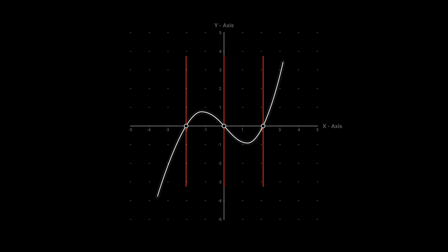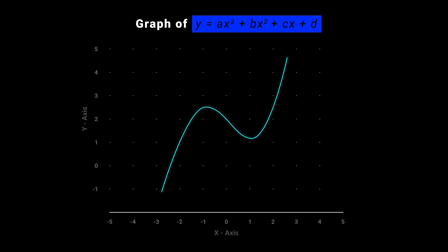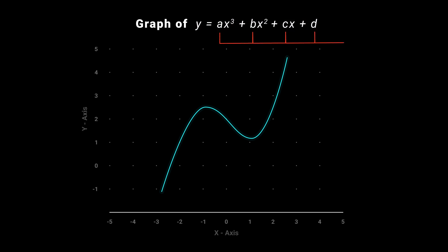Before we jump into solving cubic equations, let's make sure we understand what they are. A cubic equation is a polynomial equation of the form ax cubed plus bx squared plus cx plus d equal to zero, where a, b, c, and d are constants and x is the variable we are trying to solve for.